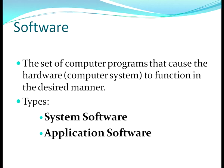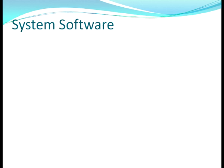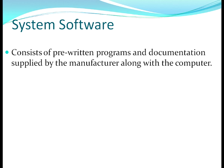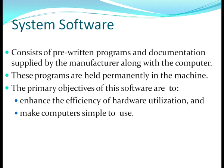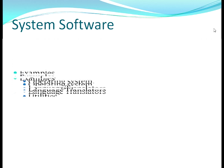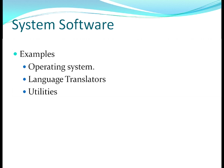Software is a set of computer programs that cause the hardware to function in the desired manner. We categorize software into two basic categories: system software and application software. System software consists of pre-written programs and documentation supplied by the manufacturer along with the computer. When you buy a computer, a pre-written program helps you boot your system. These programs are held permanently in the machine and never erased. Their primary objective is to enhance the efficiency of hardware and make computers simple to use. Examples include operating system, language translators, and utilities.